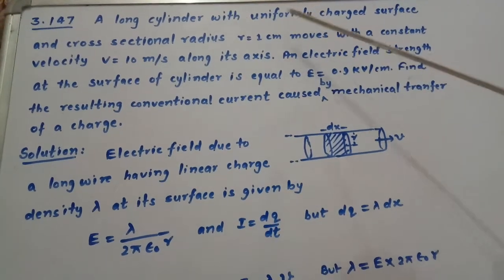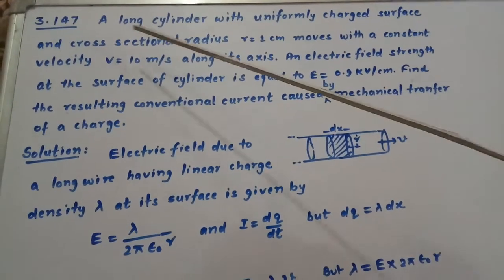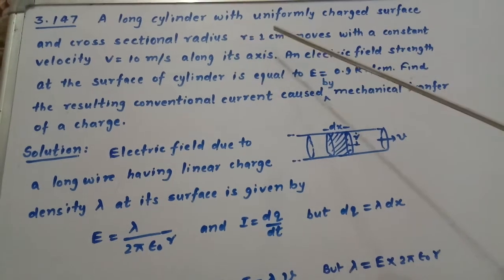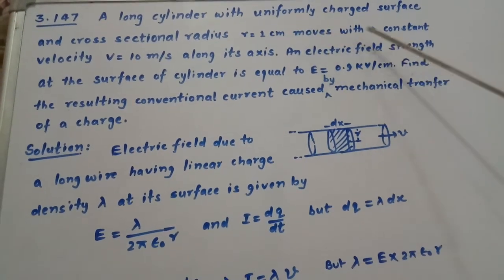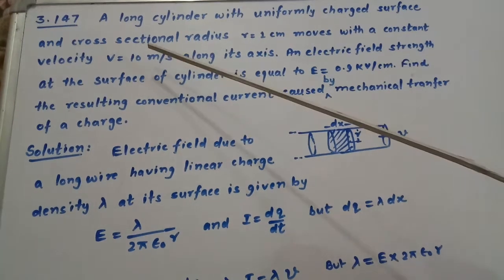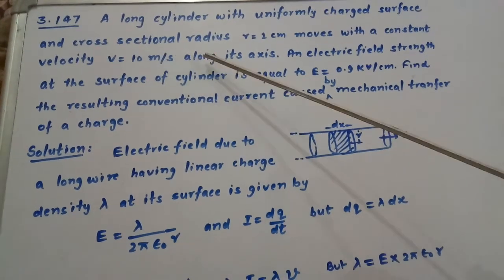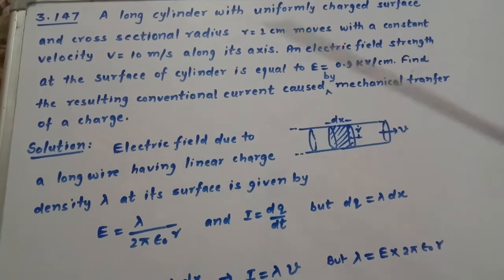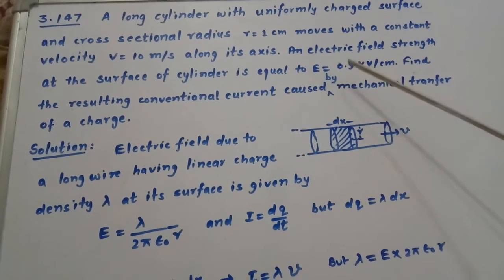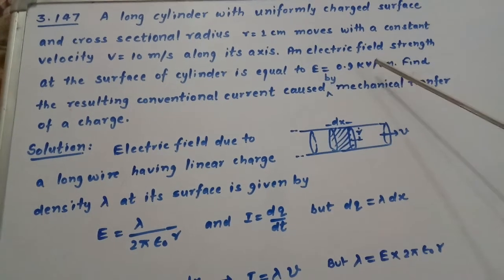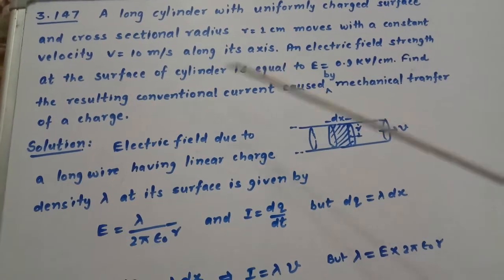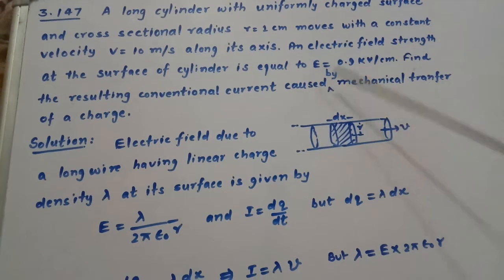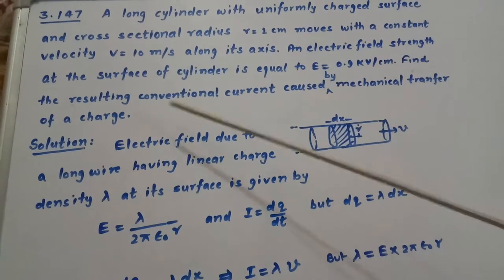A long cylinder with uniformly charged surface and cross-sectional radius r equal to 1 centimeter moves with a constant velocity v equal to 10 meter per second along its axis. An electric field strength at the surface of cylinder is equal to E equal to 0.9 kilovolt per centimeter. Find the resulting conventional current caused by mechanical transfer of charge.